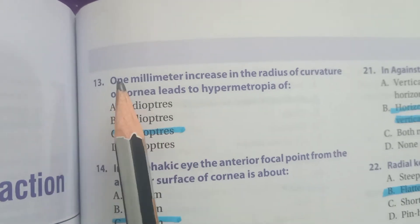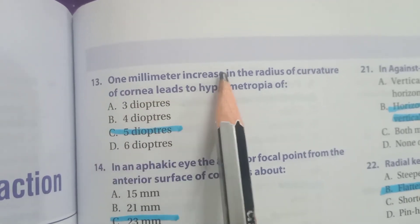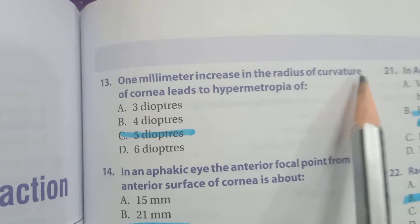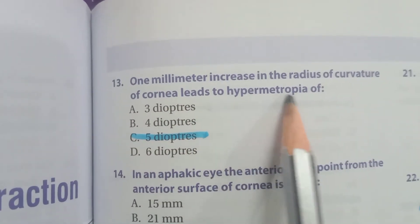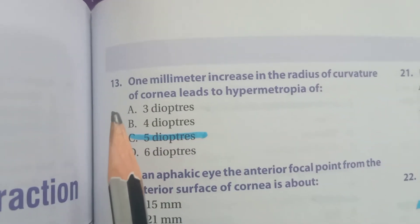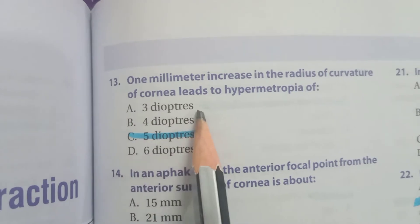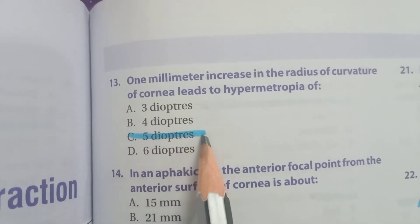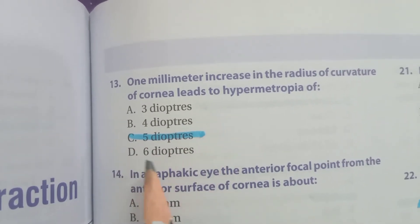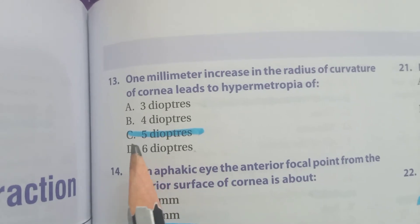Question number thirteen: one millimeter increase in the radius of curvature of the cornea leads to hypermetropia of — A) 3 diopters, B) 4 diopters, C) 5 diopters, D) 6 diopters. The correct option is C) 5 diopters.